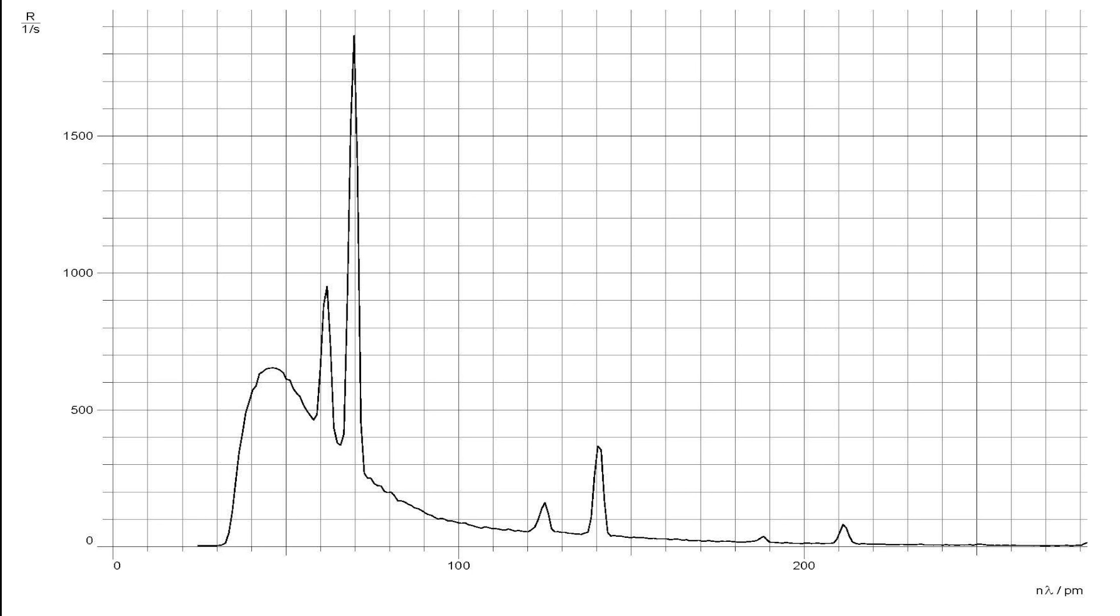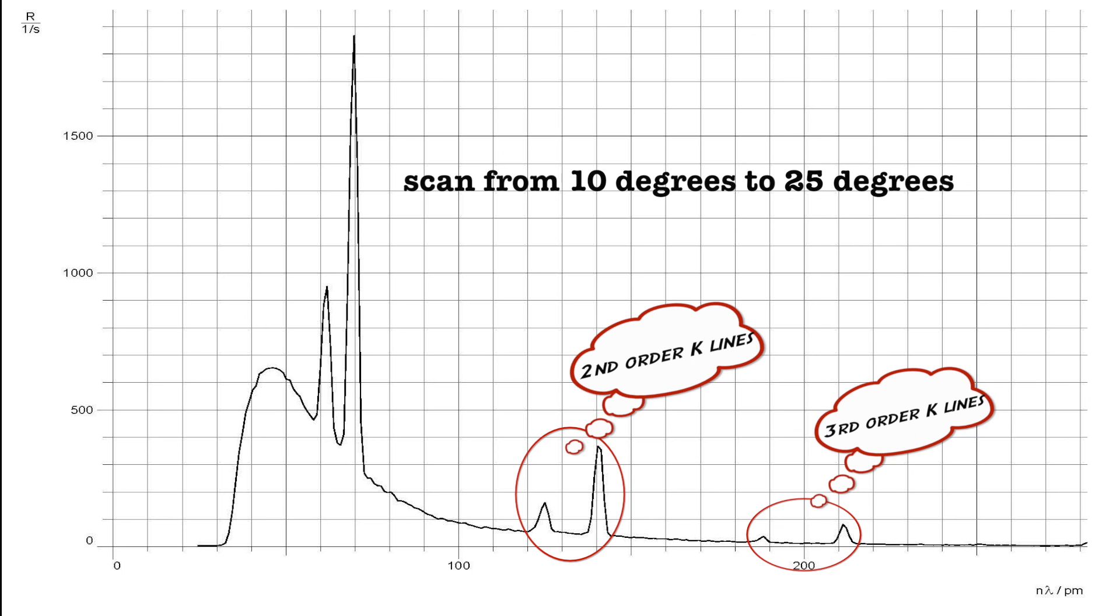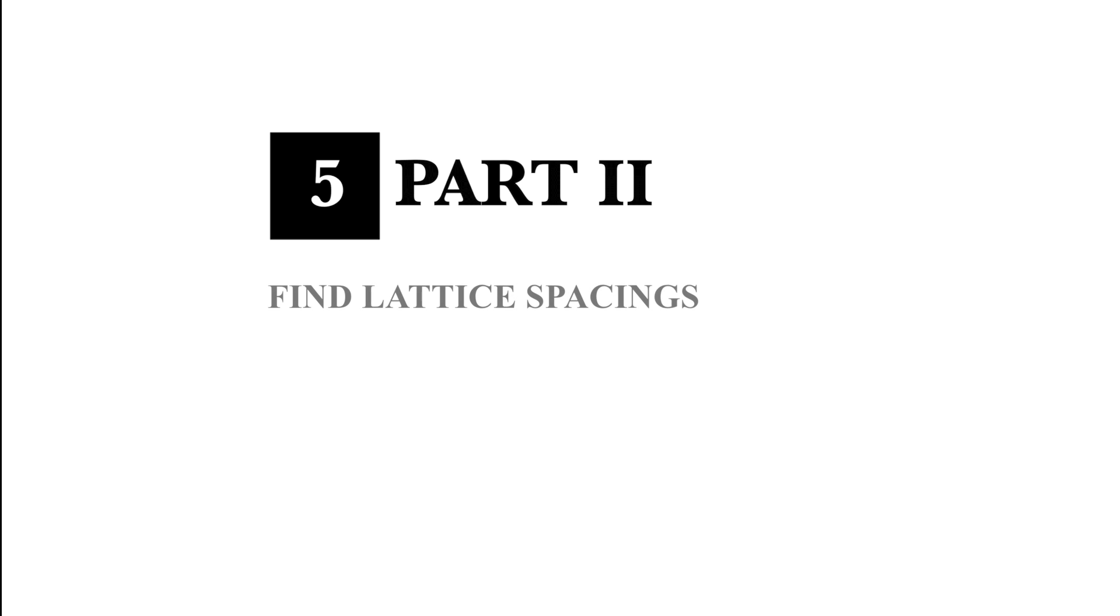For the final procedure in this part, set the voltage to 35 kV, the current to 1 mA, and the time per data point to 10 seconds. Then scan from 10 degrees to 25 degrees so that it will resolve the second and third order k-lines. The diffraction of X-rays from a crystal can be used to study properties of the X-ray spectrum.